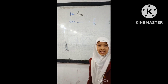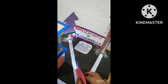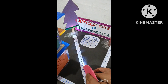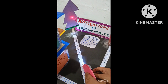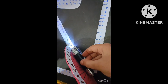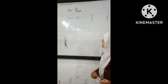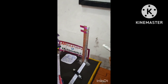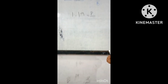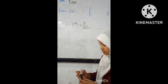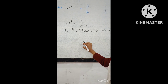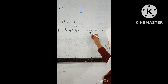Now we will measure the height of the tree. The formula is the same. Let's measure the angle. Theta is 50 degrees. Tan 50 is 1.19. The base is 29 centimeters. We will multiply 29 centimeters by 1.19. The height of the tree is 34.51 centimeters.